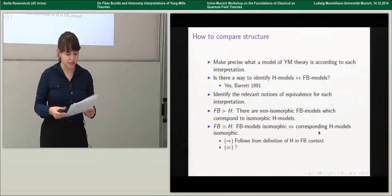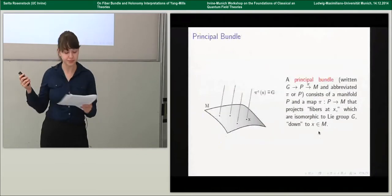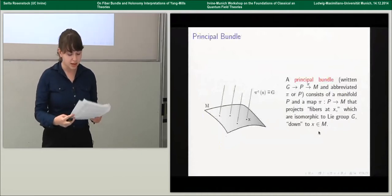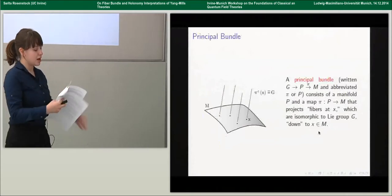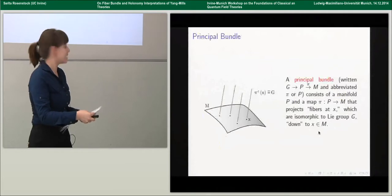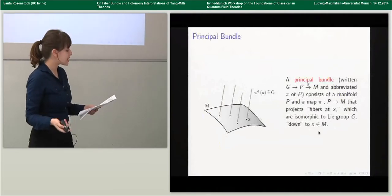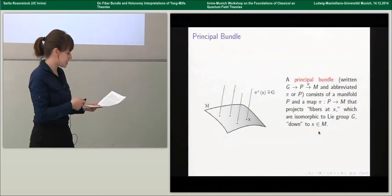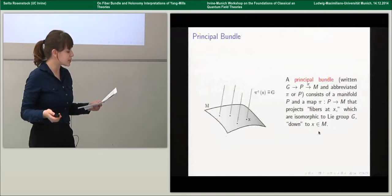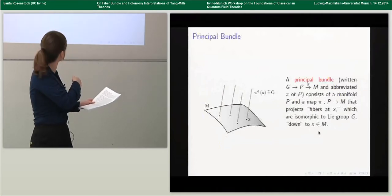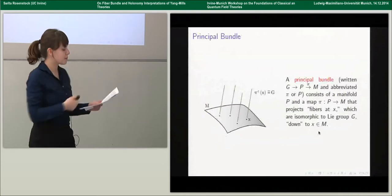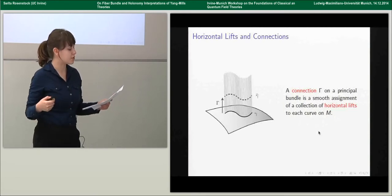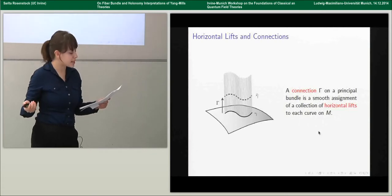Now I'll move on to formulating what a model of Yang-Mills theory is according to the fiber bundle interpretation. The first thing we need is a principal bundle. Roughly, a principal bundle consists of a manifold P and a map π from P onto our spacetime, which projects what are called fibers at x — which are isomorphic to the structure group G — down to points x. Essentially, each point in spacetime is associated with an isomorphic copy of G, called the fiber at that point. A connection on a principal bundle is then a smooth assignment of a collection of horizontal lifts to each spacetime curve.